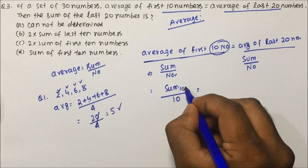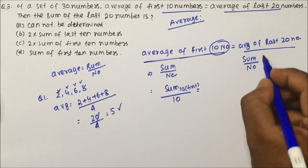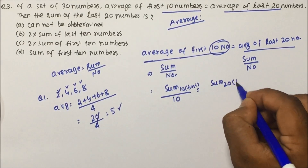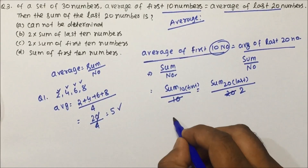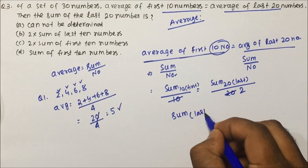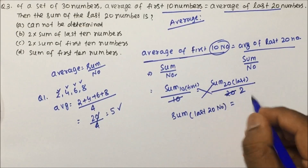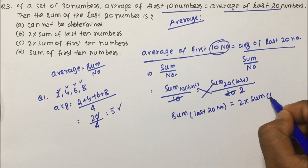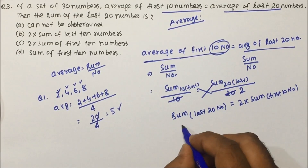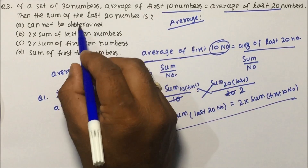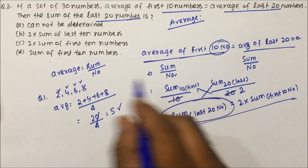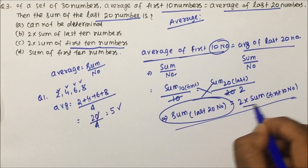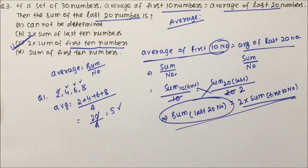Since both averages are equal, we can write: (sum of first 10) / 10 = (sum of last 20) / 20. Cross-multiplying, we get: sum of last 20 numbers = 2 × sum of first 10 numbers. So option C is the correct answer for question number 3.